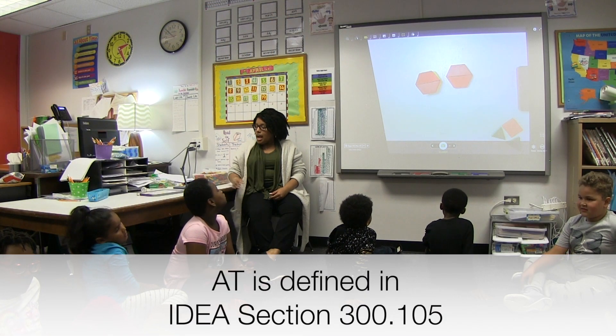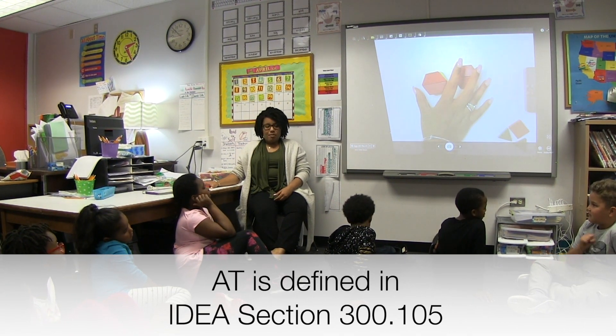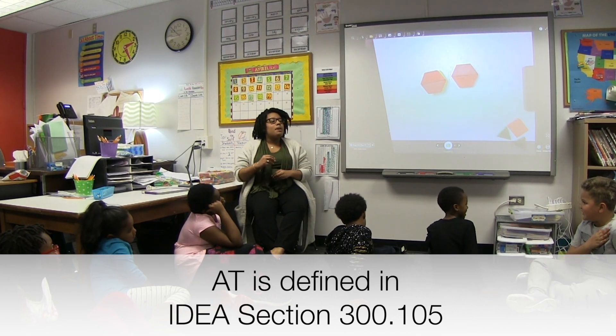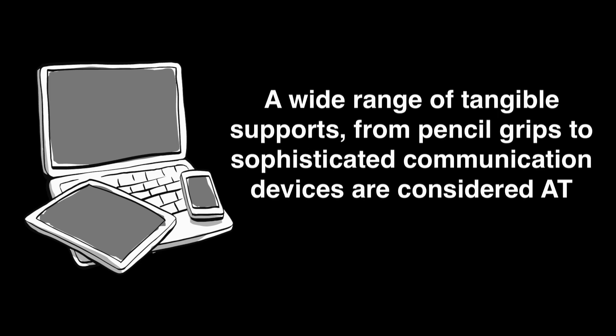The definitions of AT devices and services are codified in several federal statutes, including IDEA Section 300.105 of the Final Regulation of IDEA. Under Section 300.5, AT devices are any item, piece of equipment, or product system, whether acquired commercially off-the-shelf, modified, or customized, that is used to increase, maintain, or improve the functional capabilities of a child with a disability. Practically speaking, this means that a wide range of tangible supports provided to students with disabilities, from pencil grips to sophisticated communication devices, are considered AT.